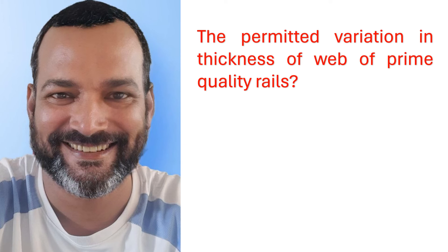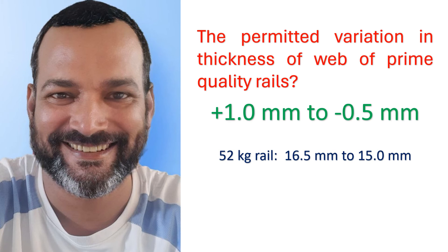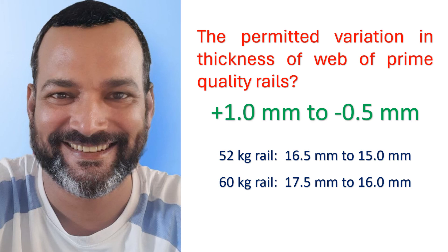The permitted variation in thickness of web of prime quality rails is +1.0 millimeter to -0.5 millimeter. For example, for the 52 kg rail the range will be 16.5 mm to 15.0 mm, and for 60 kg rails it will be 17.5 mm to 16.0 mm, as the thickness of web of 52 kg rail is 15.5 mm and of 60 kg rail is 16.5 mm.